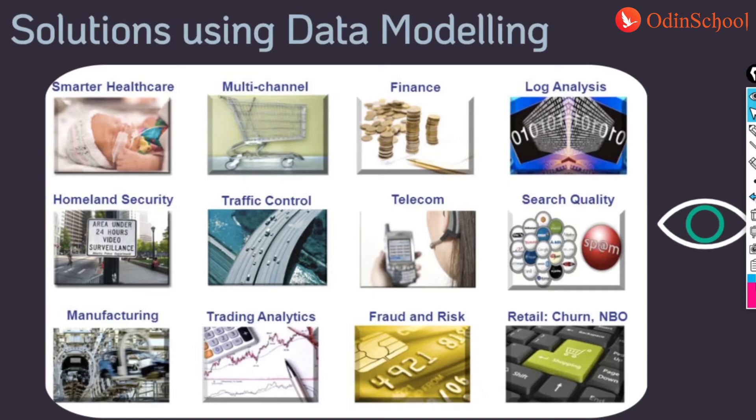Even in your smartphone, everything you use involves machine learning at the back end — that's why it's called a smartphone. Based on your browsing history, Amazon or Flipkart suggest products to you. Log analysis helps developers identify faulting applications. Based on your search history, organizations know which keywords and products people are looking for. You can name anything and machine learning is the core back-end solution. That is where a data model comes into the picture — data modeling can be used in each and everything to provide a machine learning solution.